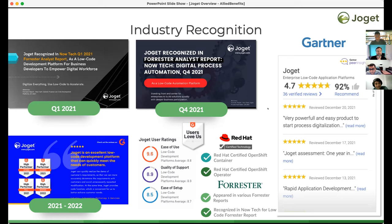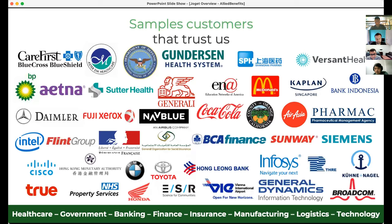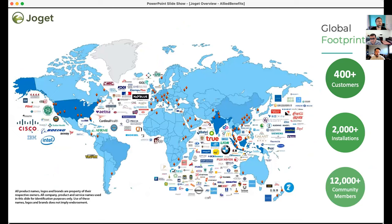Ravish: Getting back to industry recognition — we have Forrester recognition and customer reviews on Gartner Insights. We have a strong customer base globally: US Department of Defense, Canadian government, French government, Italian government, Saudi government, and commercial customers including Daimler, Toyota, BMW, and Airbus, across healthcare, government, banking, finance, and insurance. Joget apps can also be created in various languages.